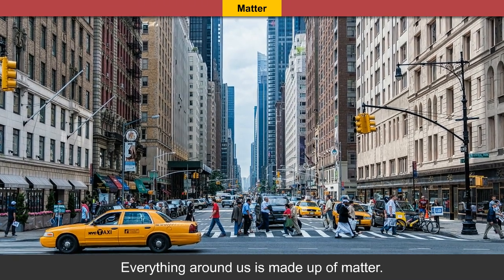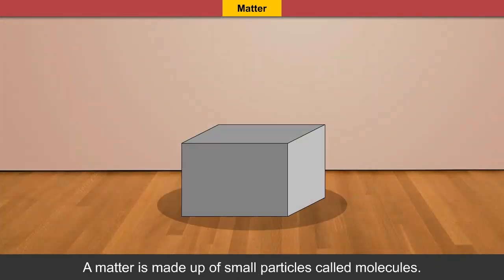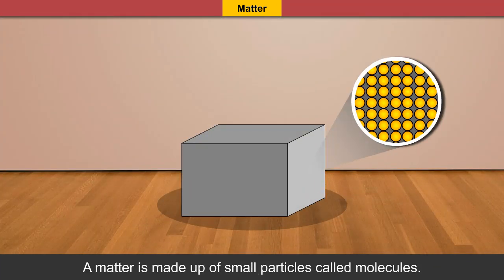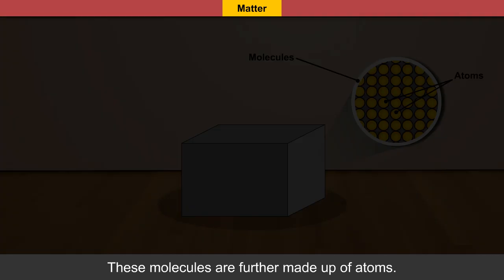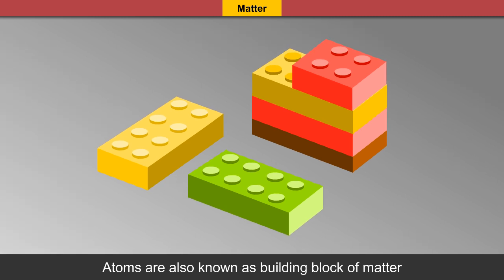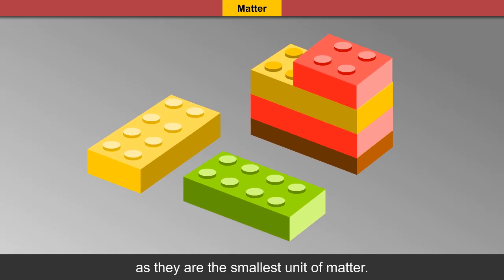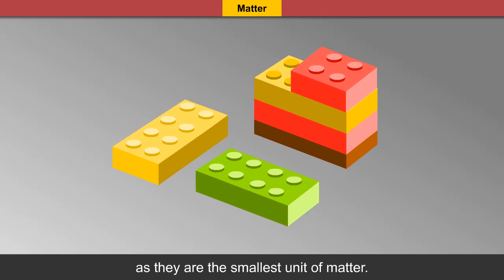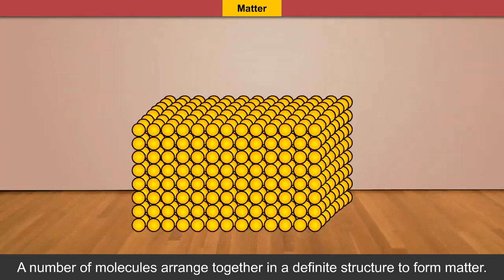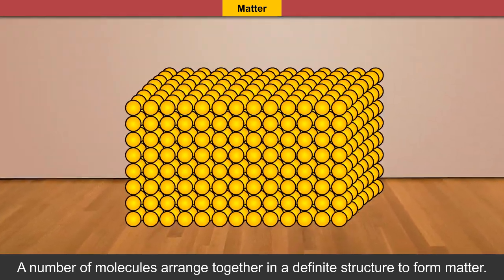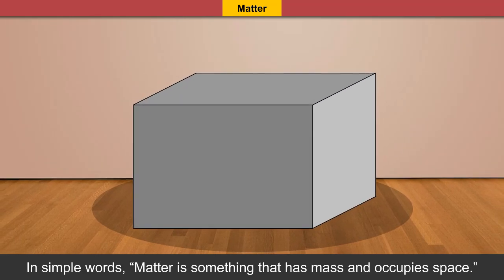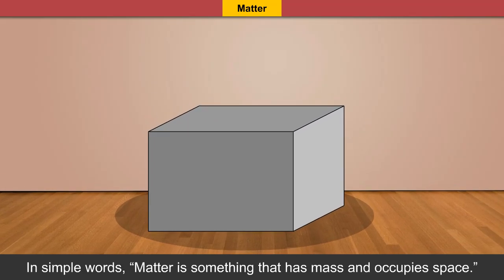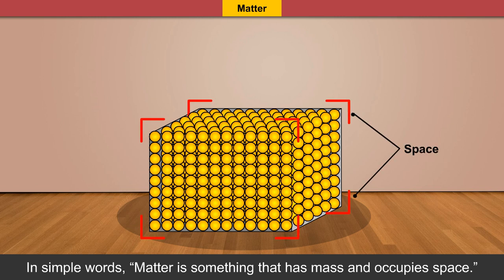Everything around us is made up of matter. Matter is made up of small particles called molecules. These molecules are further made up of atoms. Atoms are also known as building blocks of matter as they are the smallest unit of matter. A number of molecules are arranged together in a definite structure to form matter. In simple words, matter is something that has mass and occupies space.